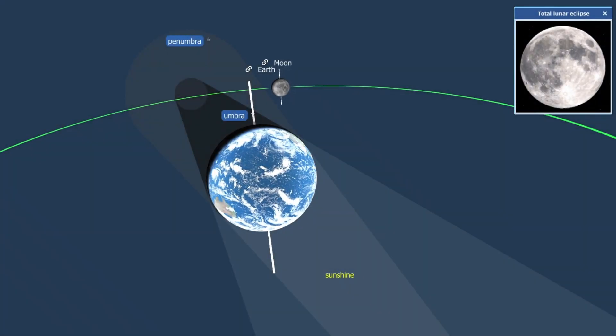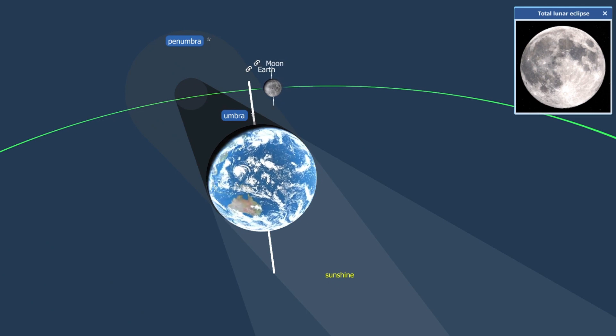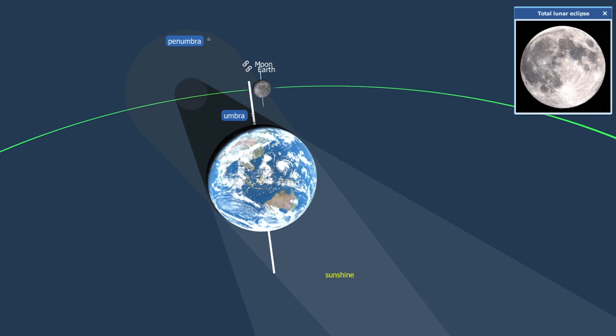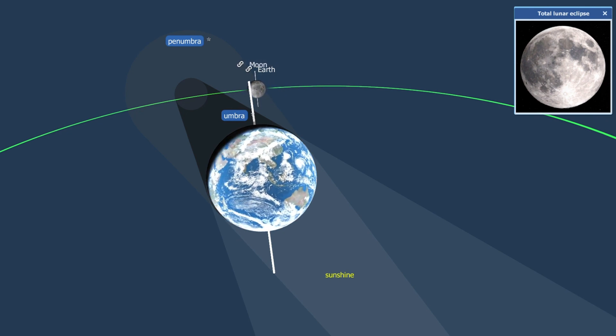A total lunar eclipse occurs when the entire Moon passes through the Earth's umbra. A partial lunar eclipse occurs when only a portion of the Moon passes through the Earth's umbra.